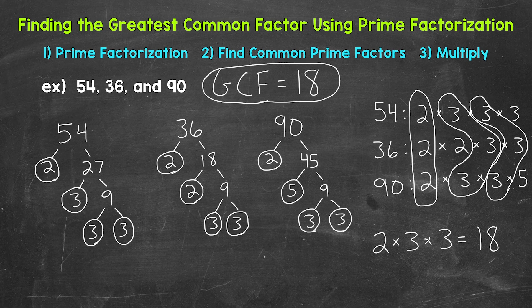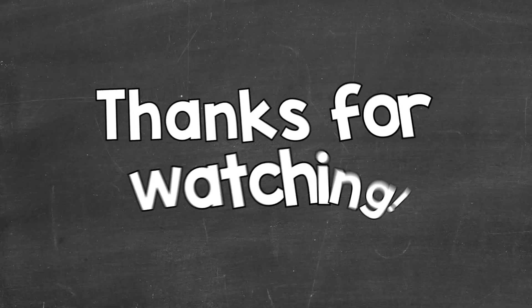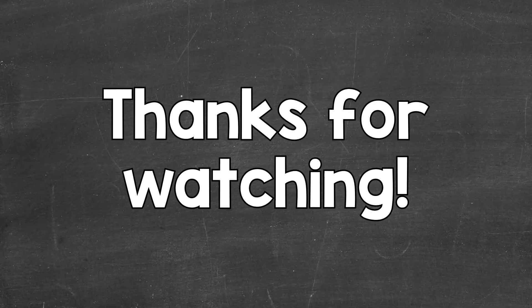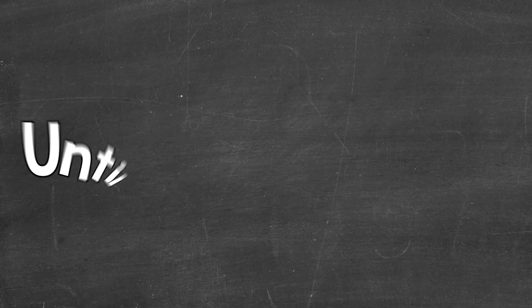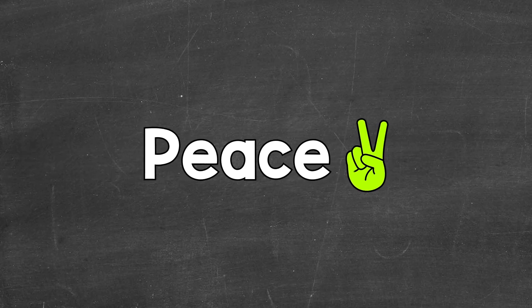So there you have it — that's how to find the GCF of three numbers using two different strategies: listing out factors and using prime factorization. I hope that helped. Thanks so much for watching. Until next time, peace.